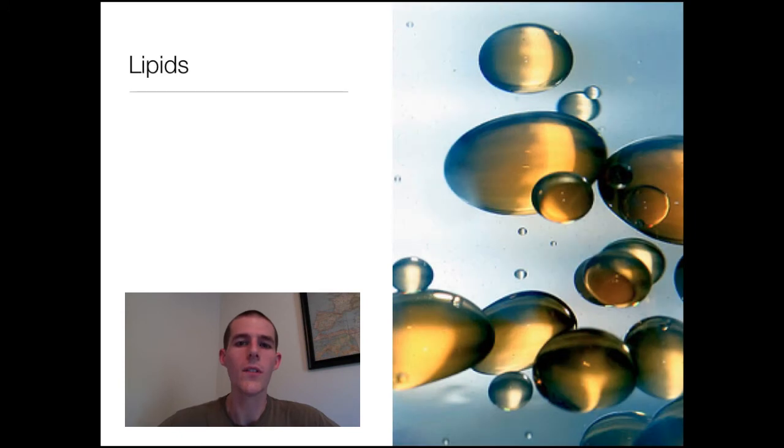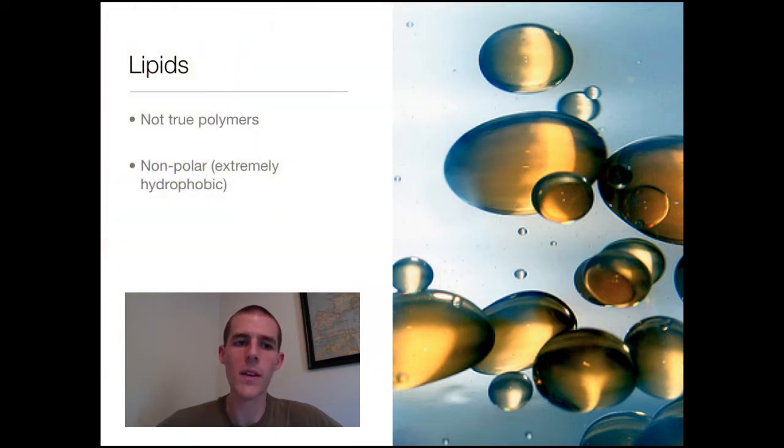First of all, let's talk about what a lipid is. First, they are not considered to be true polymers. The reason for that is polymers are molecules made up of repeating subunits called monomers. Our lipids don't have a repeating subunit, so they aren't considered to be a true polymer. But they are considered to be macromolecules because they can all be grouped together based on a specific quality: they are all non-polar and extremely hydrophobic.